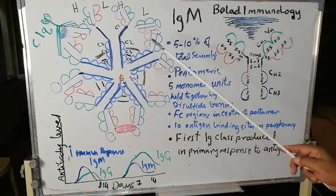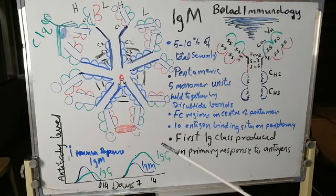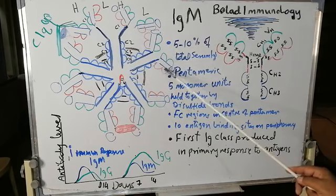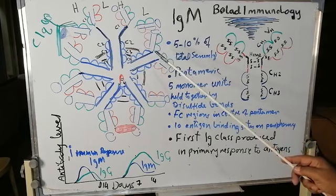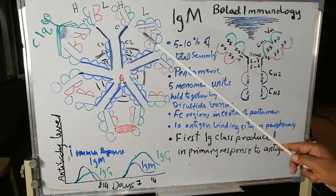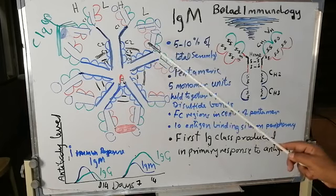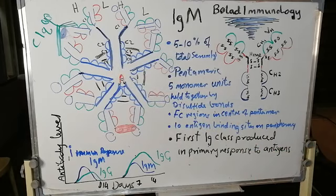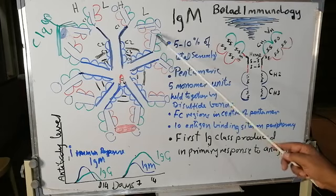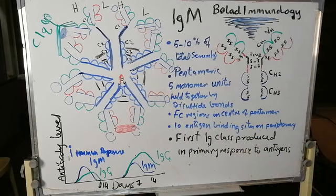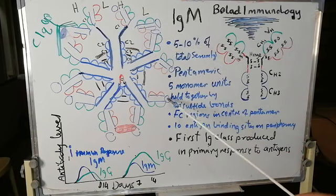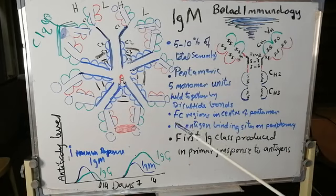The five monomer subunits are arranged with their Fc part towards the center of the pentamer, and the antibody fraction of these five subunits can bind 10 small molecules. However, they can bind only five larger molecules.